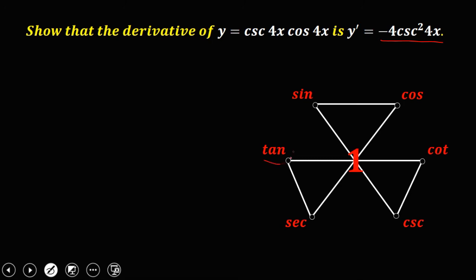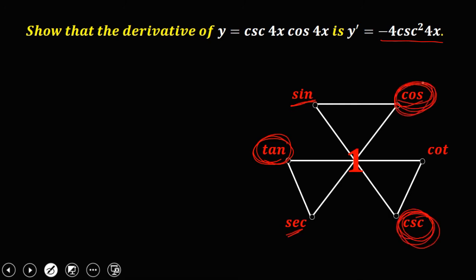If we have tangent times cosine, the answer is sine. If tangent times cosecant, the answer is secant. So from the given, if we have cosecant times cosine, the answer is cotangent. So this function is equal to y, that's cotangent 4x.